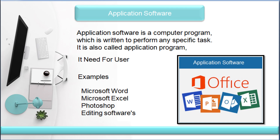Next, we have application software. Application software is a computer program which is written to perform any specific task. It is also called an application program. It is for individual user control and specific actions. For example, Microsoft Excel, PowerPoint, and Photoshop are application software. Application software depends on the user — if you use MS Office, you install MS Office; if you use Photoshop, you install Photoshop.